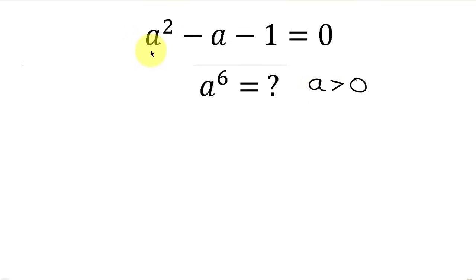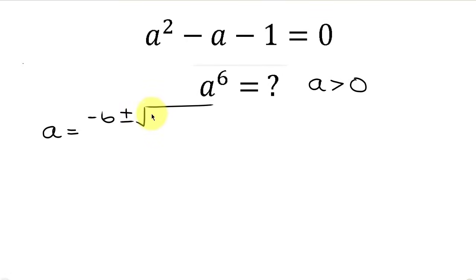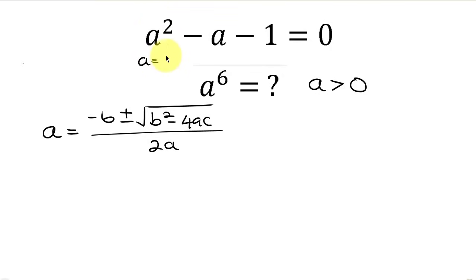Our first step will be to solve this quadratic equation. Since this quadratic equation cannot be factorized, we're going to use the quadratic formula. We're looking for A. The quadratic formula is: negative B plus or minus the square root of B squared minus 4AC, all over 2A. From this quadratic equation, A is the coefficient of a squared, which is 1; B is the coefficient of a, which is negative 1; and C is the constant term, which is negative 1.